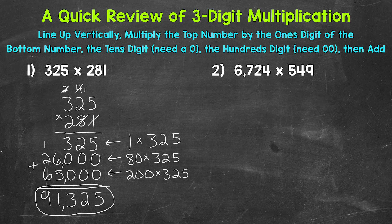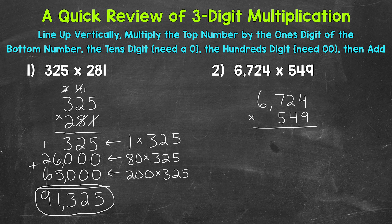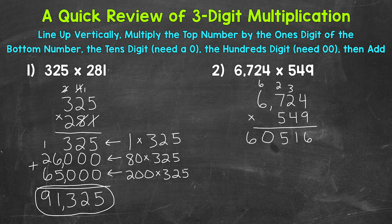Let's move on to number 2, where we have 6724 times 549. Let's line this up vertically and go through our process. We'll start with the ones digit, where we have a 9. So 9 times 4 is 36 — carry the 3. Then 9 times 2 is 18, plus that 3 is 21. Then 9 times 7 is 63, plus that 2 is 65. Then 9 times 6 is 54, plus that carried 6 gives us 60 — put our 0, and bring that 6 straight down. So we have 60,516. Put our comma in, and we are done with the ones and the carried numbers.